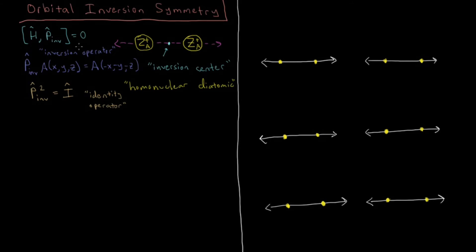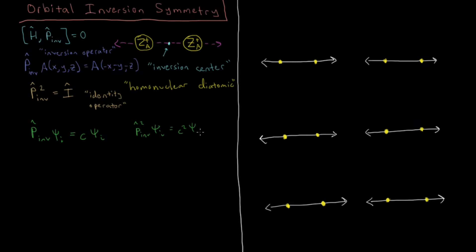Because our Hamiltonian is symmetric with respect to inversion, that means the Hamiltonian and the inversion operator commute — their commutator is zero. Just like in the previous video where we looked at the angular momentum component along the z-axis, whenever two operators commute, they have a common set of eigenfunctions. So whenever our inversion operator p acts on our wave function psi of the i-th state, you get some eigenvalue c back times the wave function. Our orbitals are eigenfunctions of both H and p, and therefore also eigenfunctions of p squared.